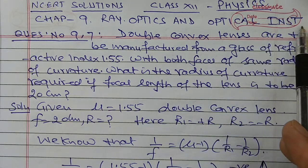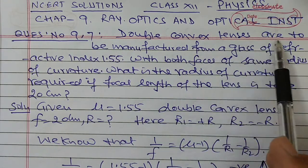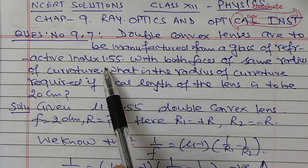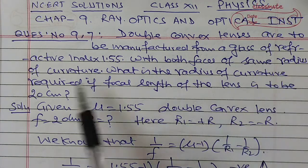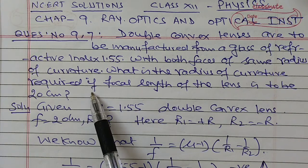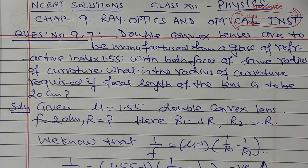Chapter no. 9, Ray Optics and Optical Instrument, question no. 9.7. Double convex lenses are to be manufactured from the glass of refractive index 1.55, with both faces of the same radius of curvature. What is the radius of curvature required if focal length of the lens is to be 20 cm?